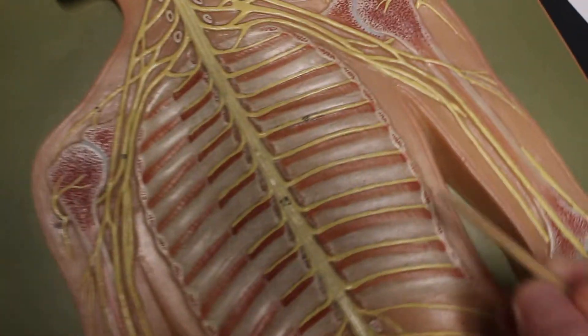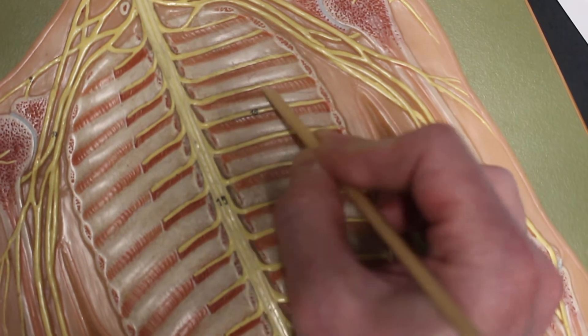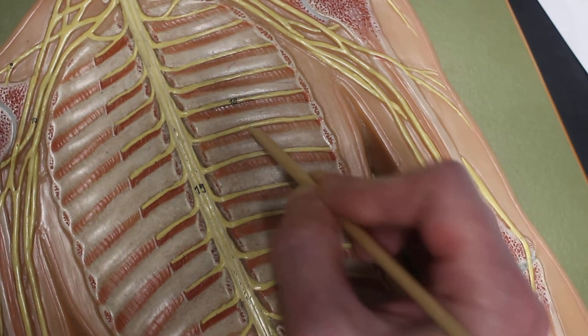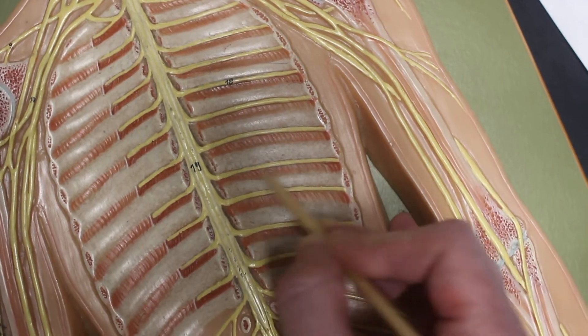Then in the thoracic cavity, each one of these nerves coming off the thoracic part of the spinal cord is known as an intercostal nerve, so these are all intercostal nerves.